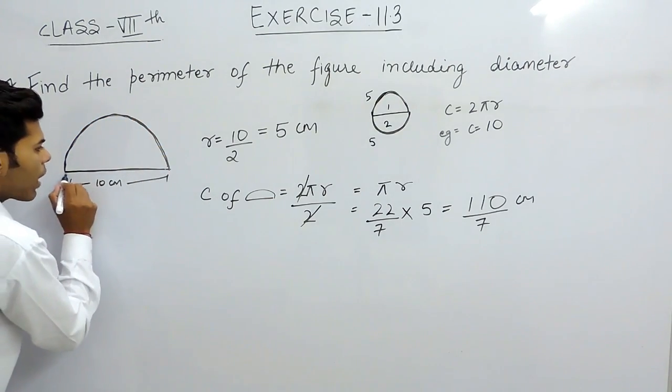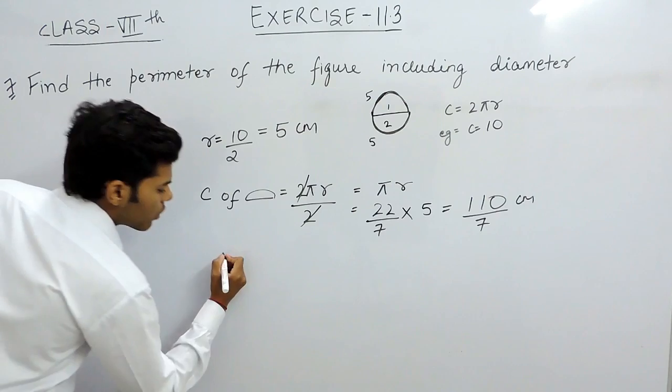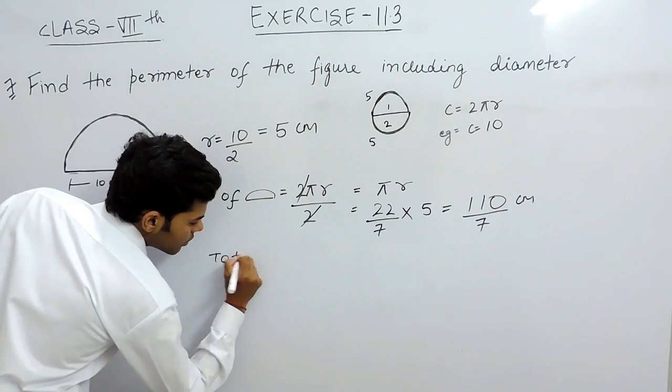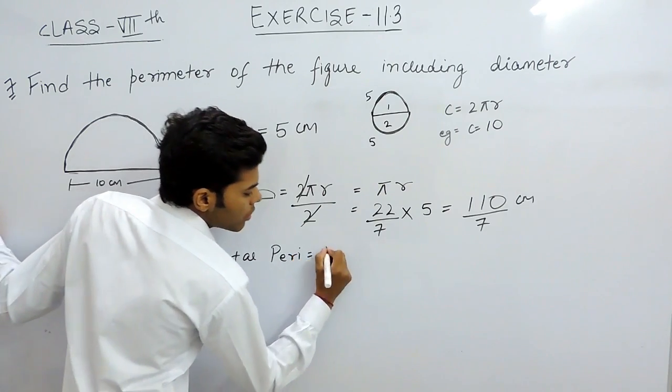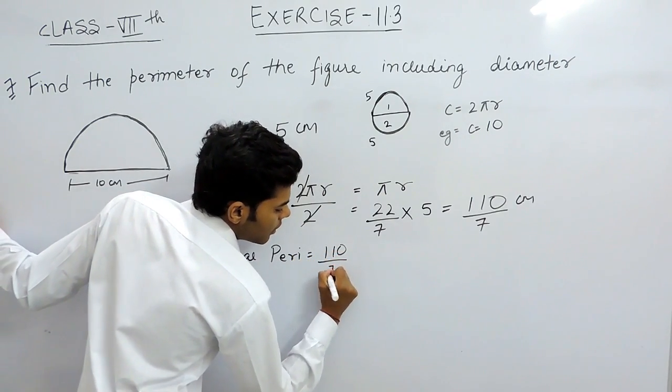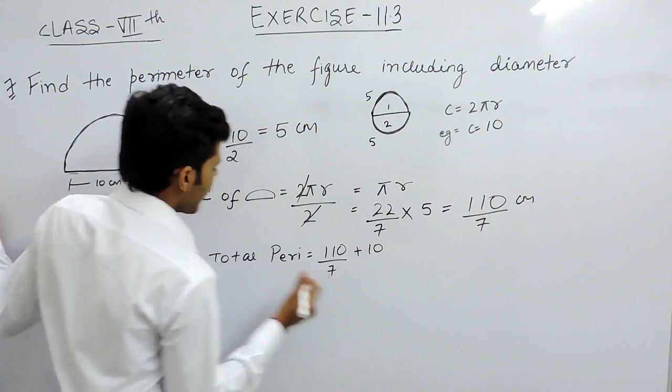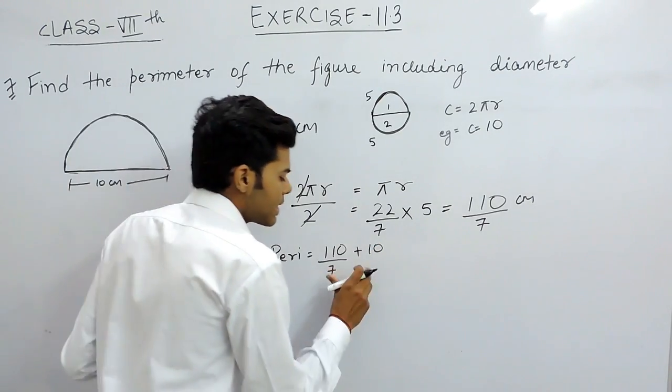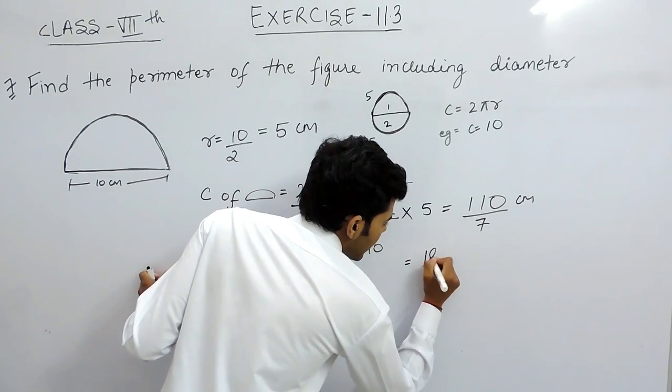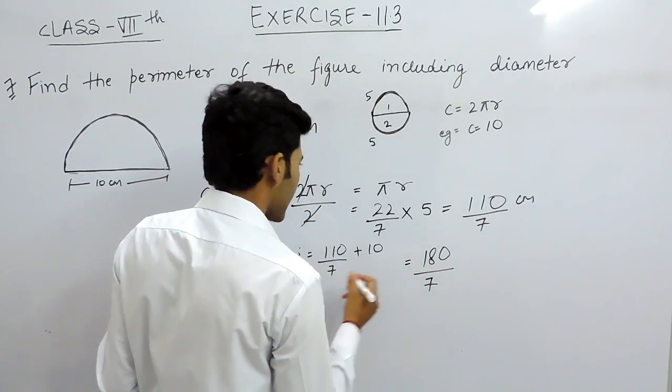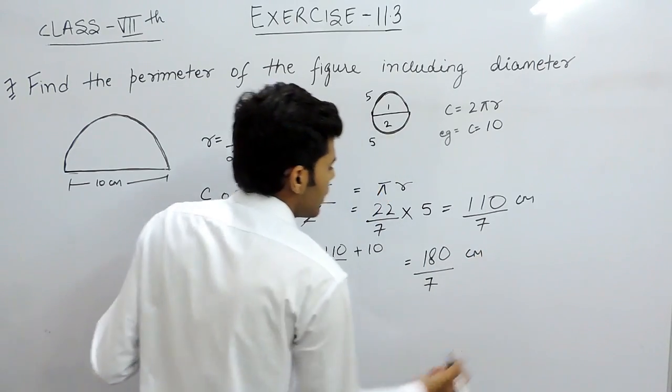But for the perimeter we have to add this also. So, the total perimeter will be equal to 110 by 7 plus 10. We will take the LCM, that will be 70 plus 110, 180 by 7 and the unit is centimeters.